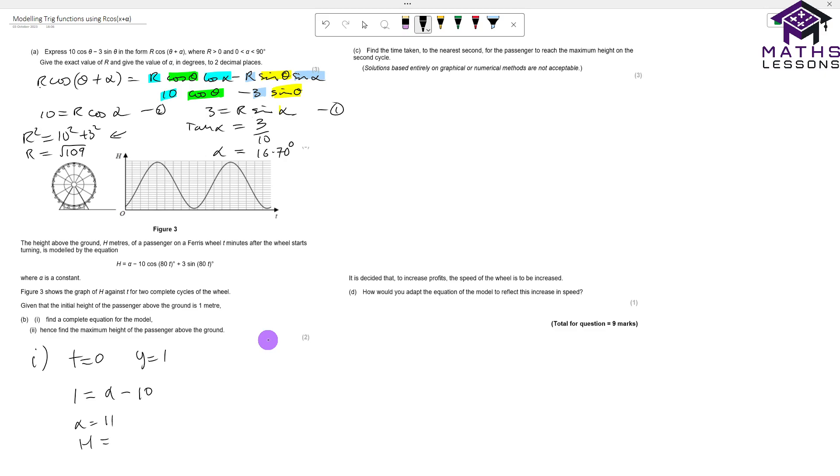Therefore my model will be h equals 11 minus 10cos(80t) plus 3sin(80t). If we want to apply what we know from before to this, we know that the 80t is going to be my θ. So I've got my r is going to be √109, and I'm going to be taking this away because in here I've got a plus 10 and here I've got a minus 10. So I've got 11 minus √109 cos(80t + 16.70 degrees). That's for part one.